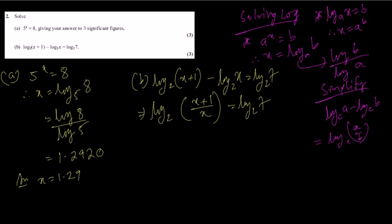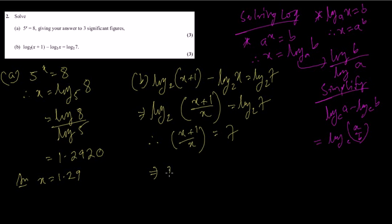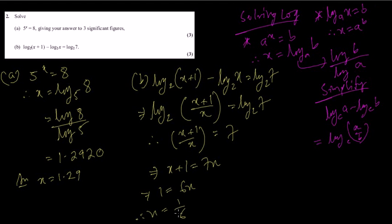There is a rule: if log base 2 of something equals log base 2 of something and they have the same base, we can directly write x plus 1 divided by x equals 7. So x plus 1 equals 7x, therefore 1 equals 6x, therefore x equals 1 by 6.